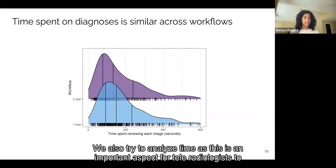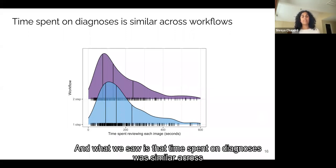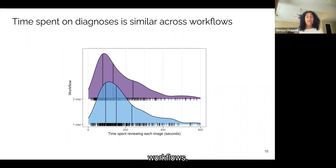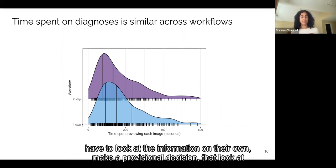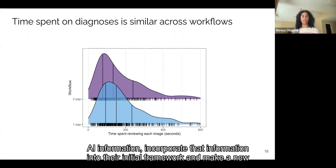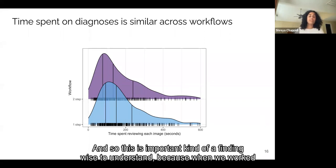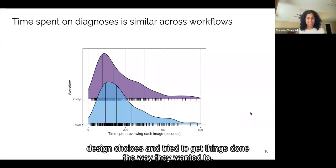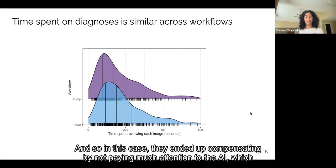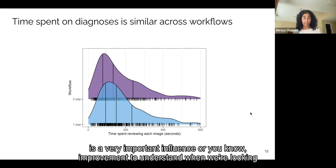We also tried to analyze time as this is an important aspect for teleradiologists to be able to conserve during the day. And what we saw is that time spent on diagnoses was similar across workflows. And this is unexpected, right? Because by design, we'd expect workflow two to take longer because here the participants have to look at the information on their own, make a provisional decision, then look at AI information, incorporate that information into their initial framework and make a new decision. And so this is an important finding to understand, because when we worked with real radiologists and real users, we can see that they ended up compensating for design choices and tried to get things done the way they wanted to. And so in this case, they ended up compensating by not paying much attention to the AI, which is a very important influence or improvement to understand when we're looking at deployment.